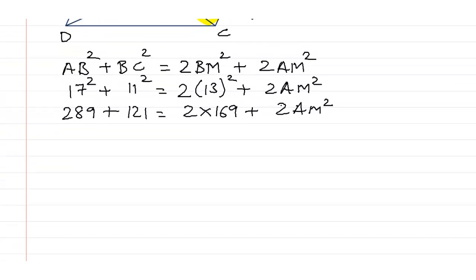If we solve this further, it would be 9 plus 10, 1 carry, 8, 9, 10, 11, 1 carry, 2, 3, 4, 410, this is equal to 2 times 169 plus 2 times AM square.